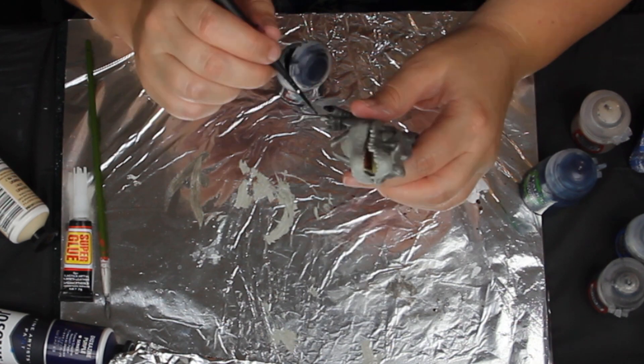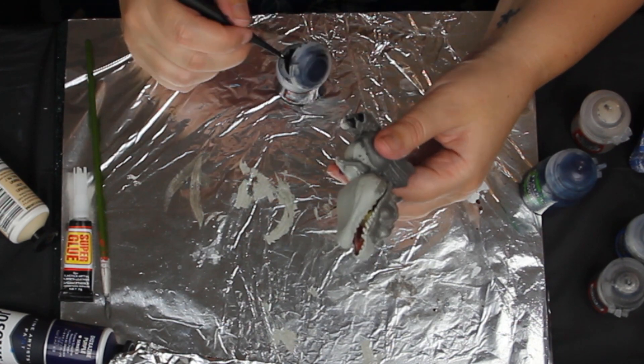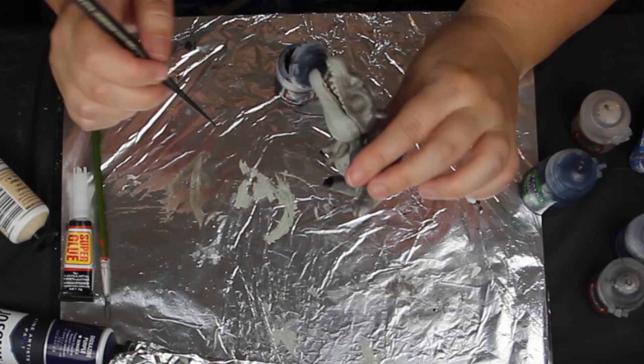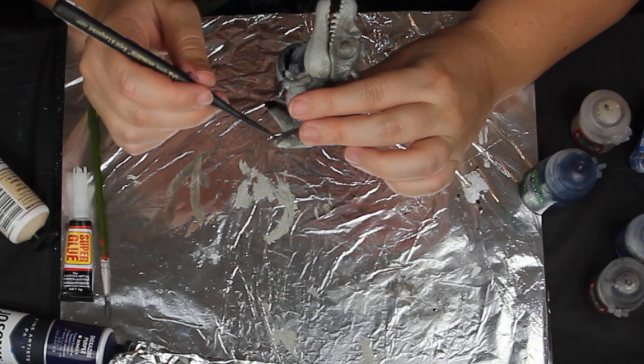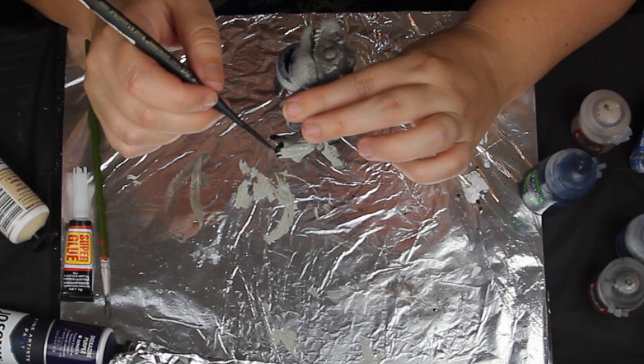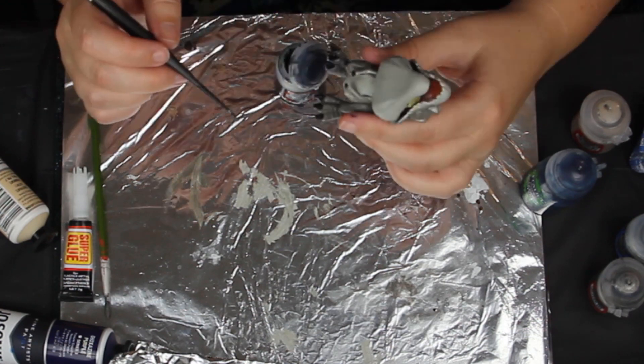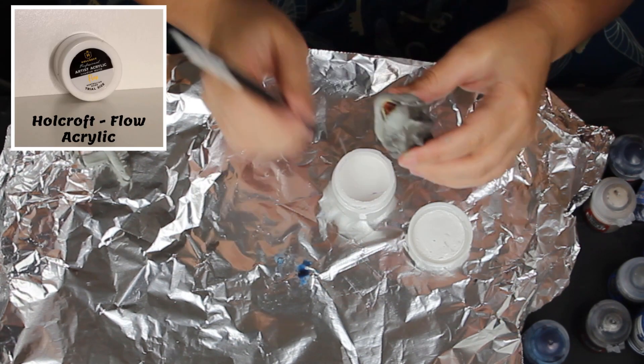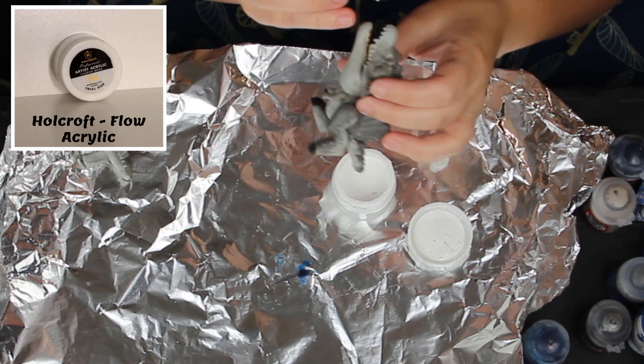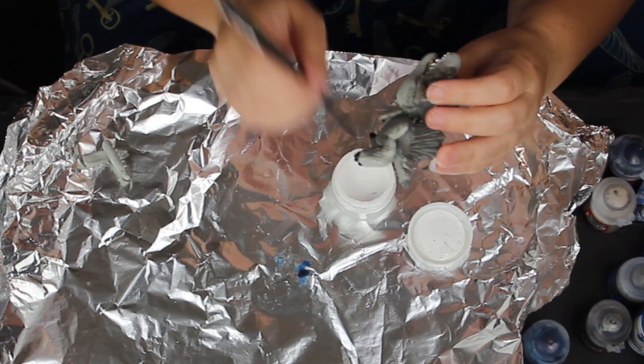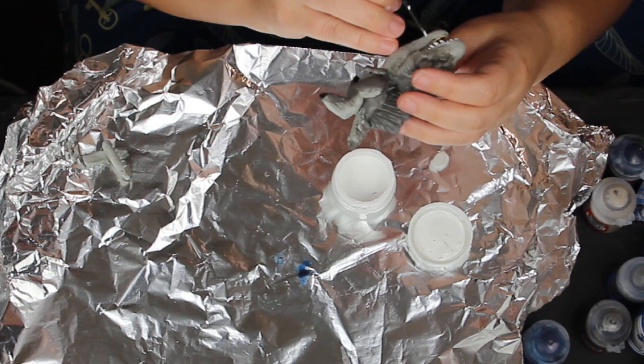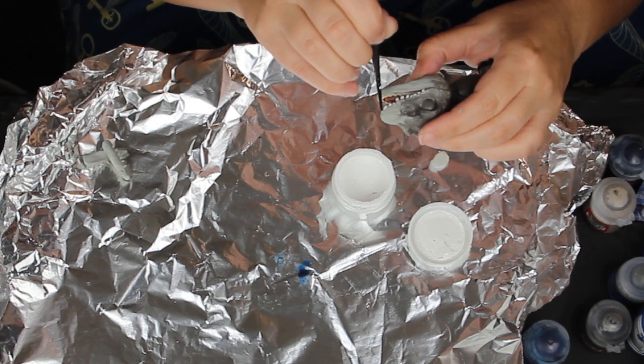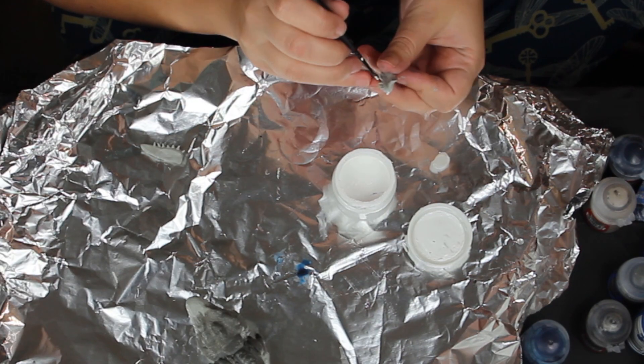Now we do the claws in Citadel Black. Time for the teeth. And I'm using a High Flow from Hallcraft. No special reason that I'm using a High Flow, it's just this particular paint goes on in one layer. Saves me having to do many layers in paint on the teeth. I kind of want to keep the teeth smooth. Now the tiny teeth on the splitting jaw.